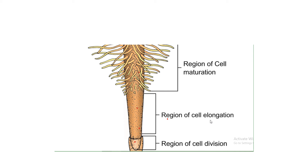The next zone is the zone of elongation, where cells are elongated. After that is the region of cell maturation — also called the mature zone. In this region, we can differentiate the root's cross-section into epidermis, cortex, and vascular bundles. This region also bears root hairs, which help absorb water and minerals from the soil.